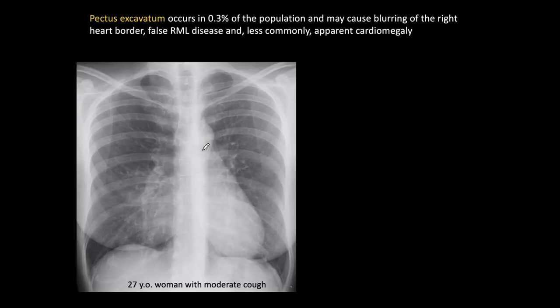Pectus excavatum is the third normal variant I want to talk about. It's fairly common, occurring in about 0.3% of the population, and can give several manifestations. The most common is blurring of the right heart border, and sometimes it can produce an opacity in the area of the right middle lobe, simulating right middle lobe disease.